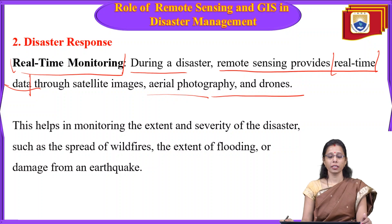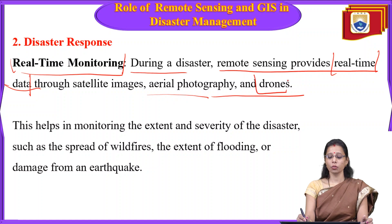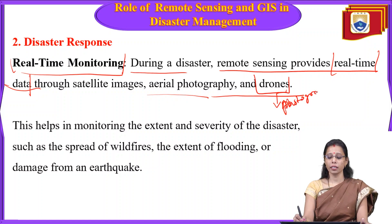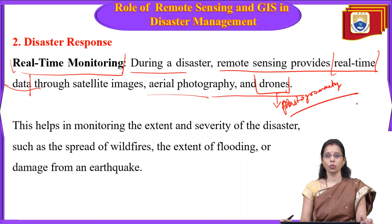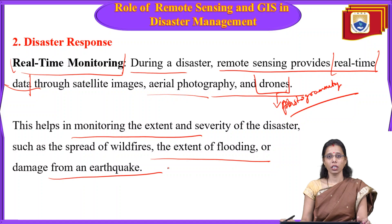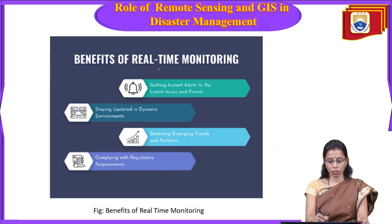Through satellite images, aerial photography, and drones, real-time information is collected. If a sudden flood occurs and the satellite takes time to respond, drones are used to collect immediate information. Drones are a form of remote sensing, specifically photogrammetry, capturing photos and videos of affected areas. This helps in monitoring the extent and severity of disasters such as the spread of wildfires, the extent of flooding, or damage from earthquakes.